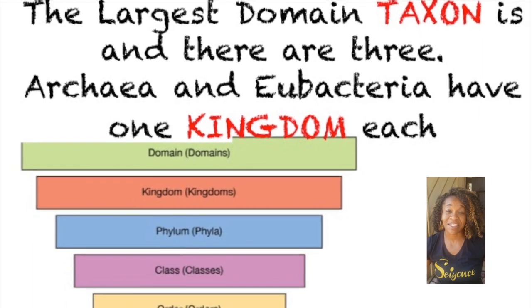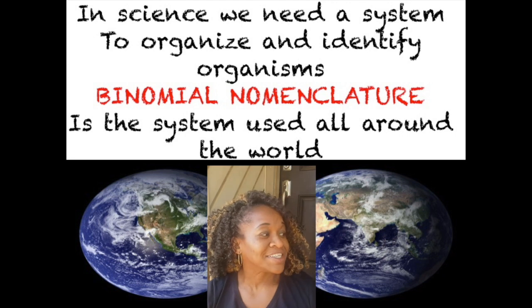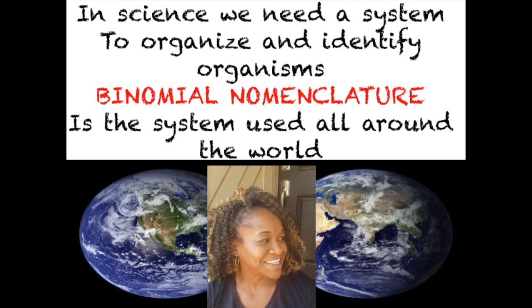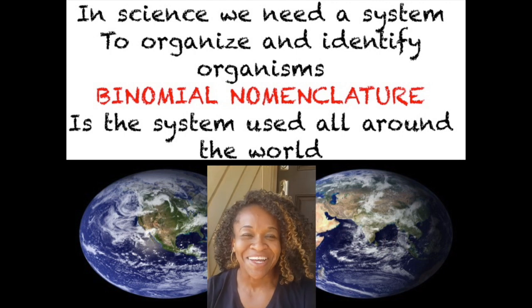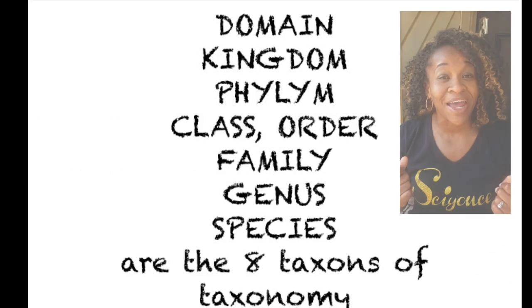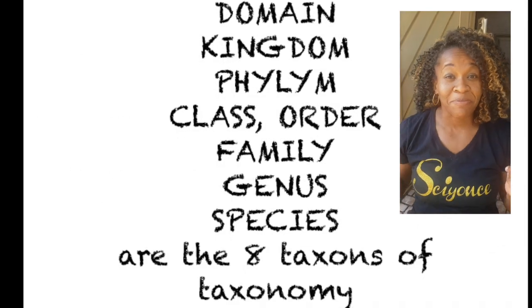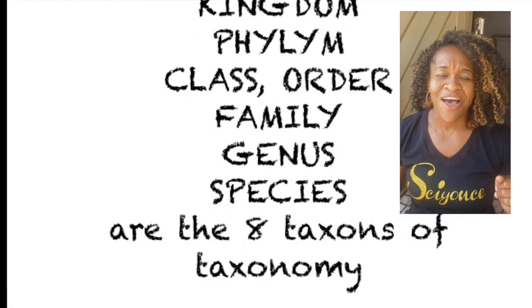Domain is the biggest taxon and there are three: Archaea and Eubacteria have one kingdom each. Domain, Kingdom, Phylum, Class, Order, Family, Genus, Species — these are the eight taxons of taxonomy.